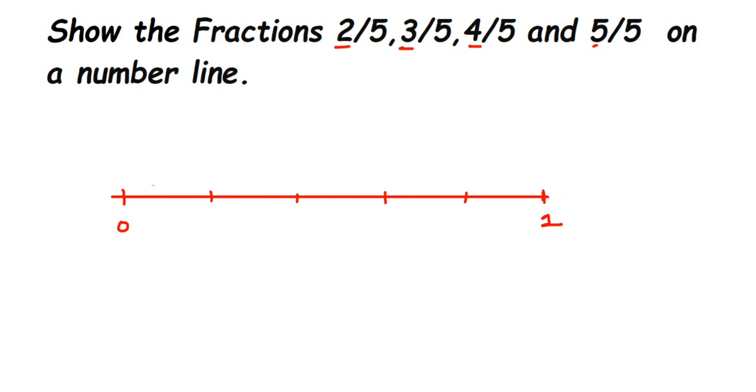Now we have to plot it. After zero - zero can be written as 0/5 or you can just write zero. The next number will be 1/5. We have five equal parts. The next number will be 2/5, the next number will be 3/5.